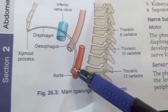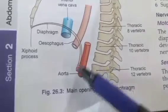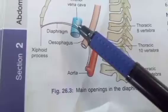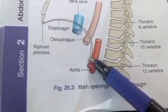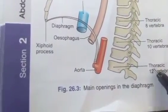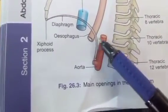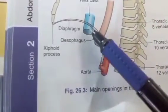There are three large or main openings in the diaphragm: the aortic opening, esophageal opening, and vena caval opening. The aortic opening is osteo-aponeurotic and lies at the level of the lower border of the 12th thoracic vertebra. The vena caval opening lies in the central tendon of the diaphragm at the level of the 8th thoracic vertebra.